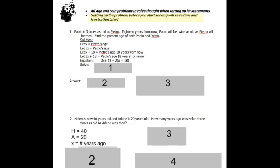Paolo is three times as old as Petro. Eighteen years from now, Paolo will be twice as old as Petro will be then. That means in that eighteen years from now, in eighteen years. Okay, when you read that question that way, find the present ages of both. So the way you do this is you set up the situation now and you set up the situation in eighteen years. Right now, Paolo is three times as old as Petro. In eighteen years, Petro is going to be his age now plus eighteen, and Paolo will be his age now plus eighteen.